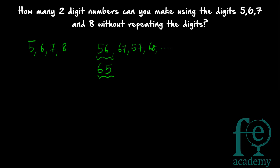Since arrangement matters, this is a form of permutation. Whenever arrangement matters, you take permutation. When arrangement does not matter and just selection is required, it is a case of combination. So here you have to apply the formula for permutation. There are four numbers total and you have to arrange two numbers at a time, so your answer will be 4P2.